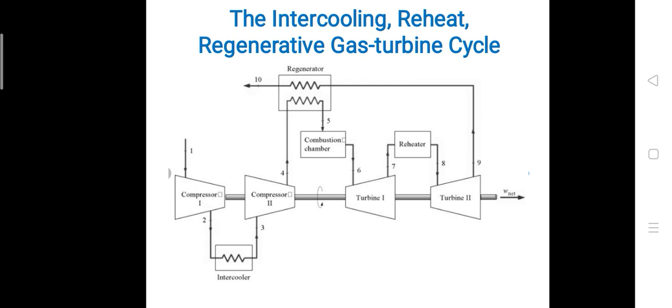The reheated gas then goes to turbine 2 — the LPT, that is the low pressure turbine. Again the gas gets expanded in the low pressure turbine, rotating the shaft of the alternator and generating power.